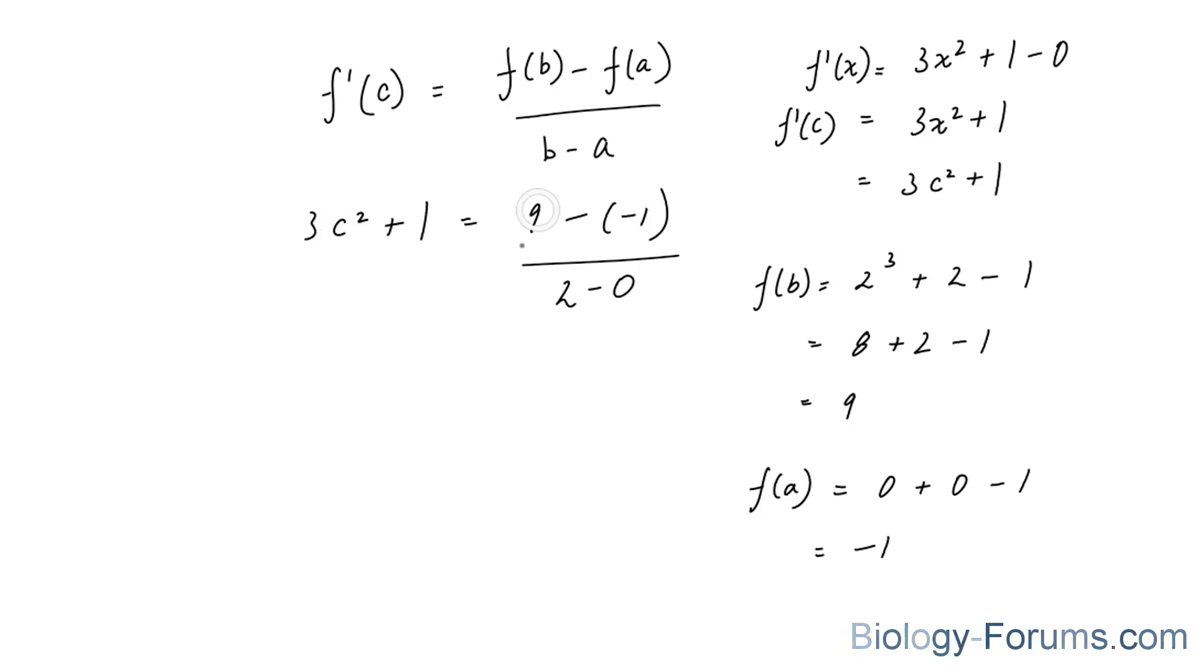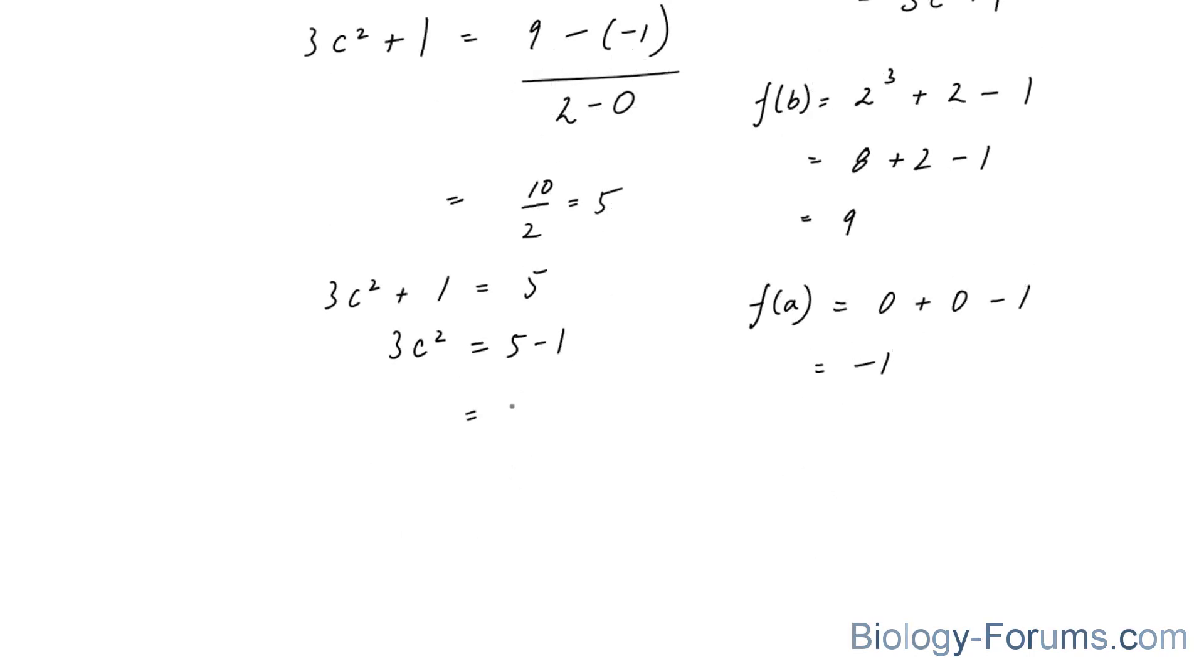And let's solve for c. Simplifying the right side gives us 10/2, which is 5. And 3c² + 1 = 5 gives us a c value of 5 - 1 = 4, divided by 3 equals c². And we square root both sides to give us c = √(4/3) and -√(4/3).